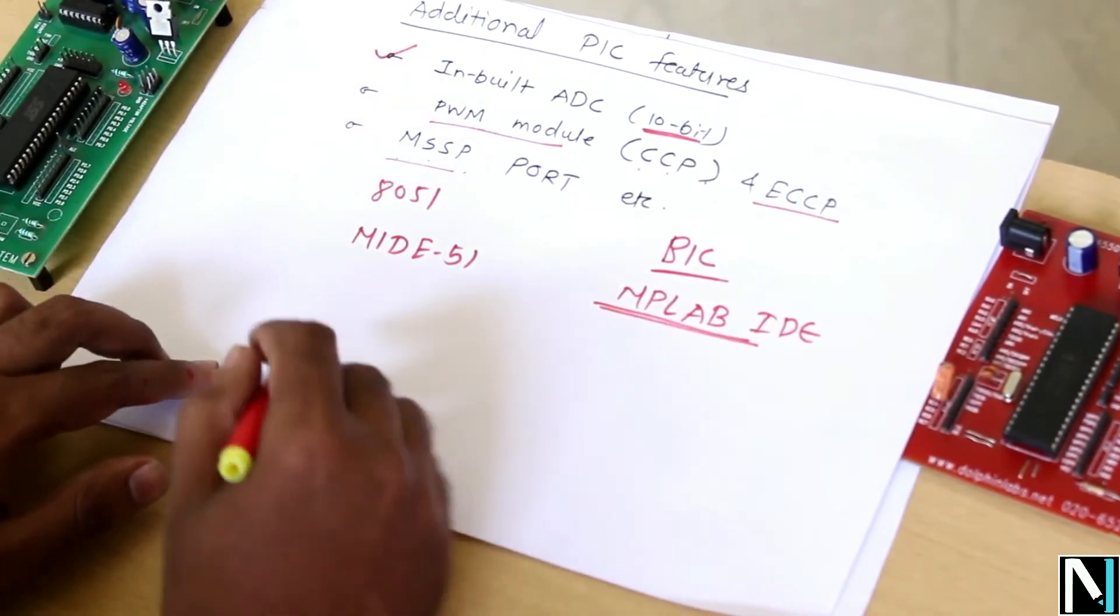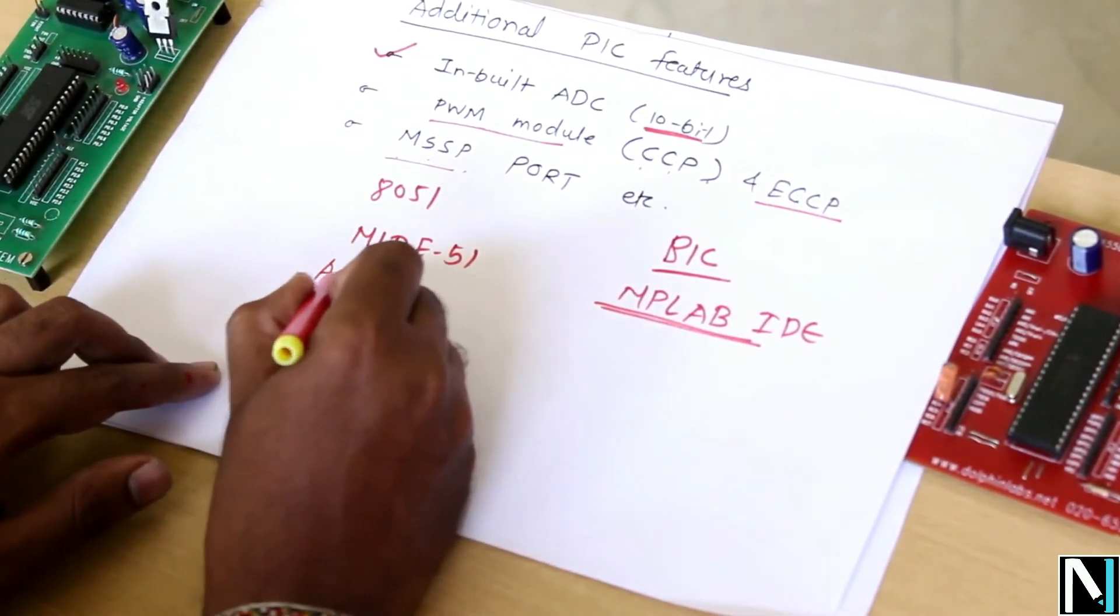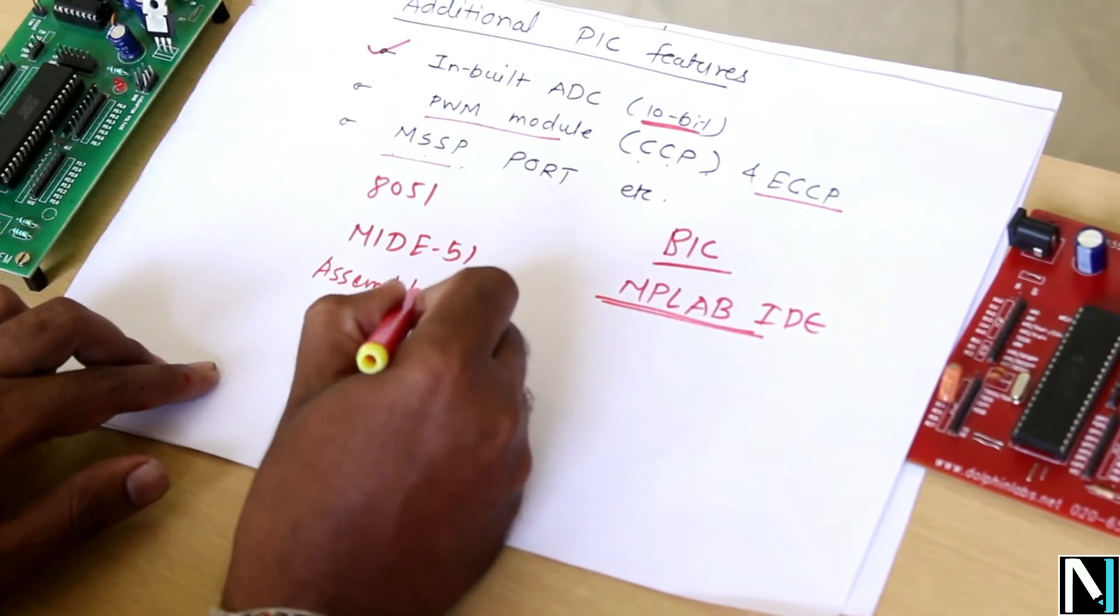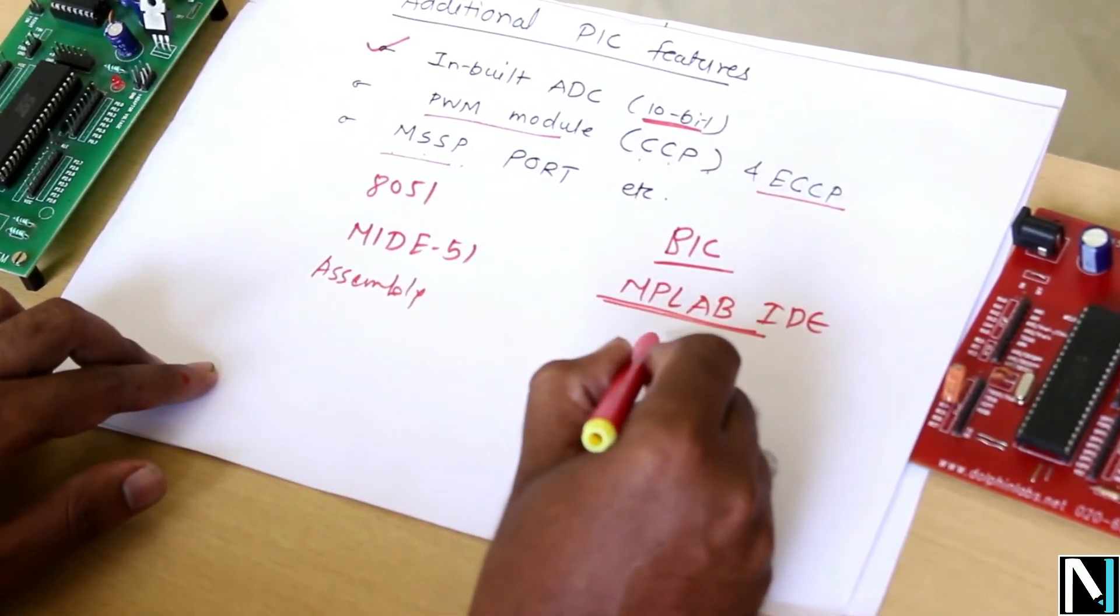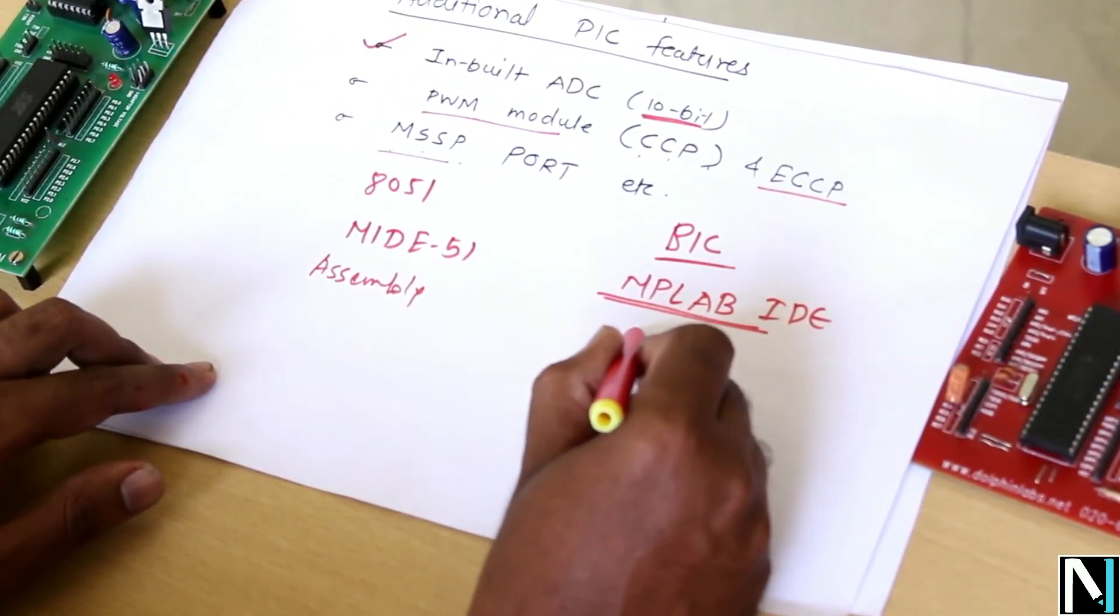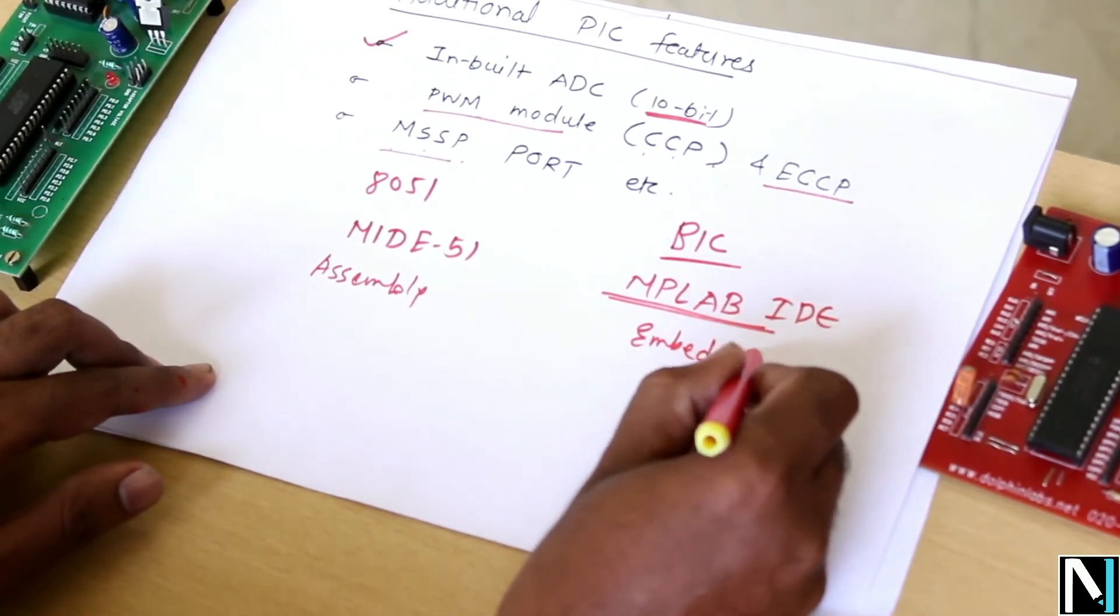For 8051 microcontroller, you have to program in the assembly language, while in case of PIC microcontroller, you have to program the microcontroller in embedded C language. So that's it.